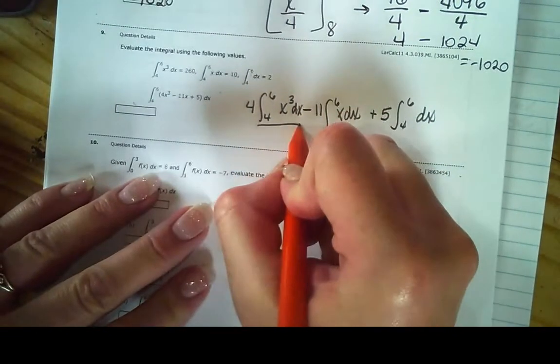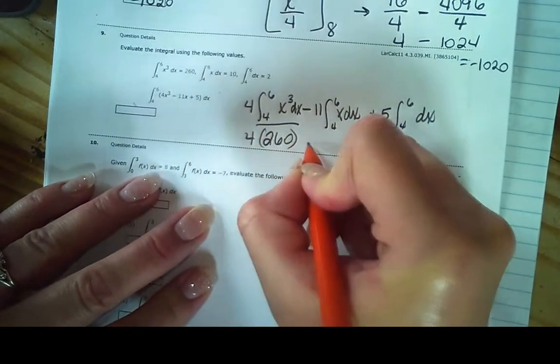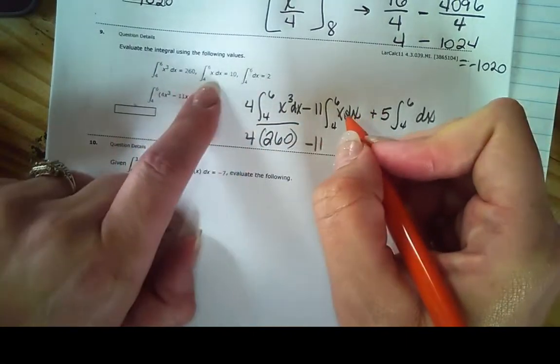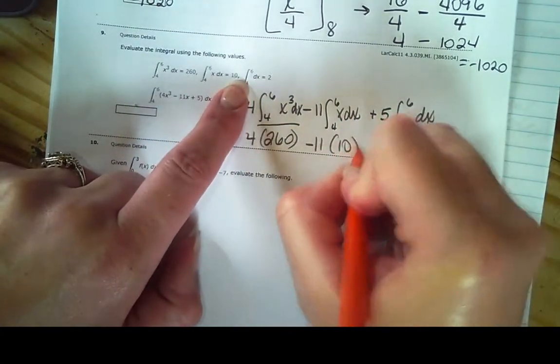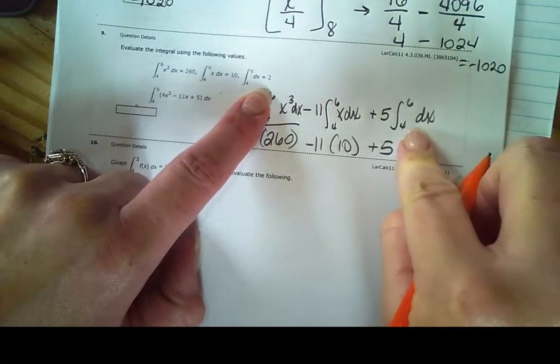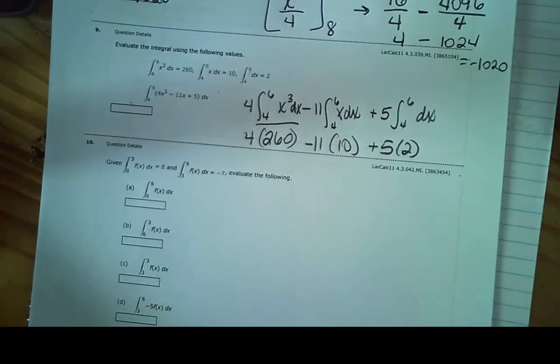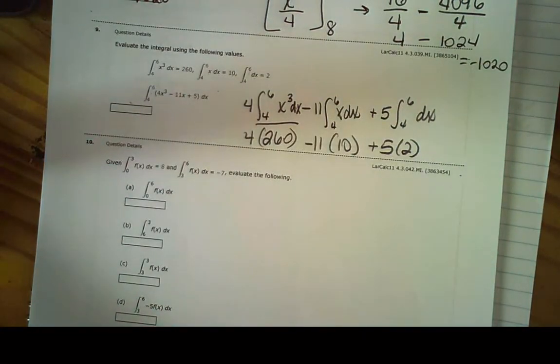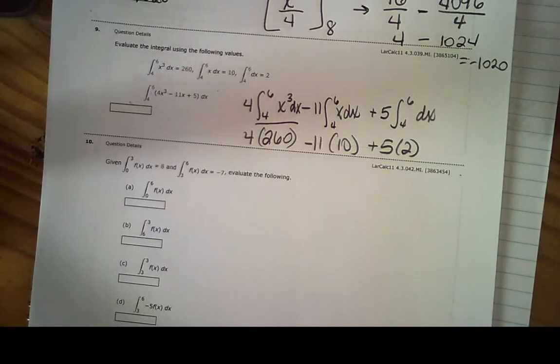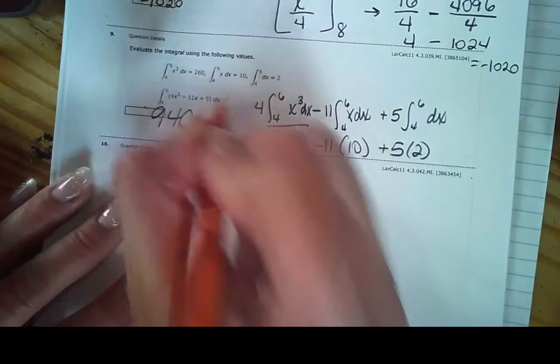Well, I already know what this is. This is 260. So I've got 4 times 260 minus 11, I already know what this is, it's 10. And then plus 5, I already know what this is, it's 2. So 4 times 260 minus 11 times 10 plus 10 is going to be 940. So that's an answer of 940.